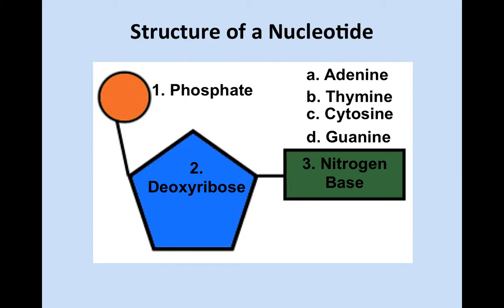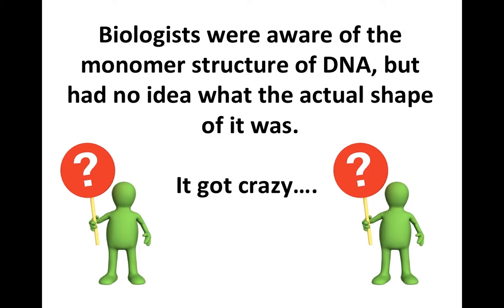What we just covered is what scientists knew about DNA a long time ago — the monomer structure. But they had no idea what the actual shape of it was. The shape mattered tremendously because it could help explain how DNA works and does what it needs to do. It got crazy because a lot of scientists wanted to be the first one to get credit for discovering the shape of DNA.